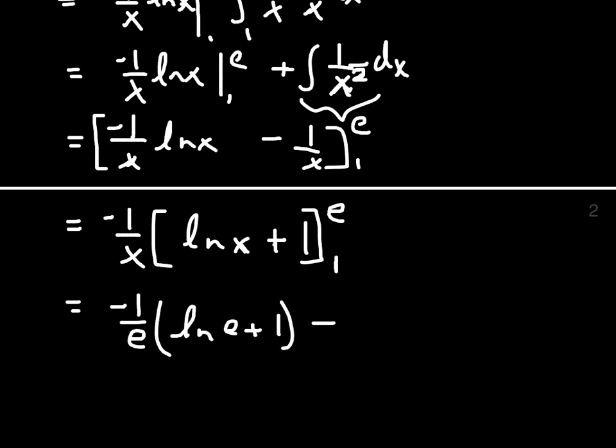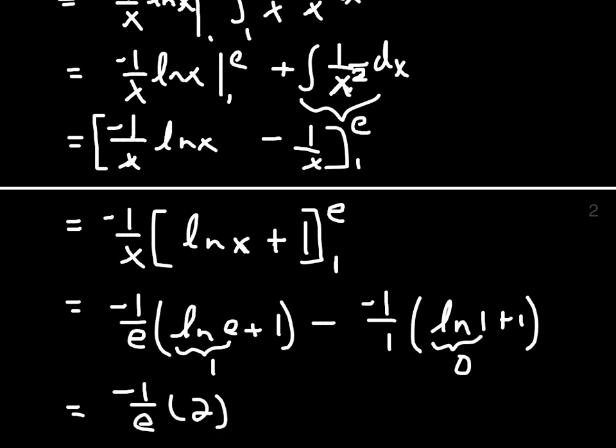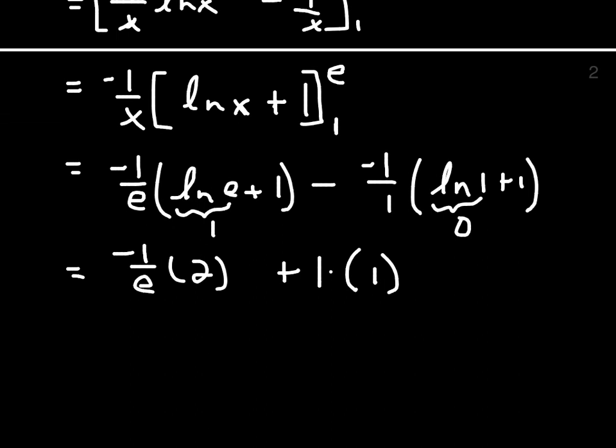And then we plug in the 1, we get negative 1 over 1 times the ln of 1 plus 1. ln of e is 1, the ln of 1 is 0, so we end up with negative 1 over e times 2, plus 1 times 1. So the final answer then written in simplified form is 1 minus 2 over e.